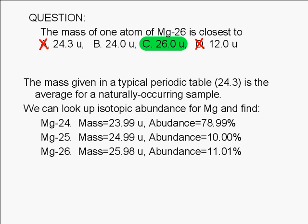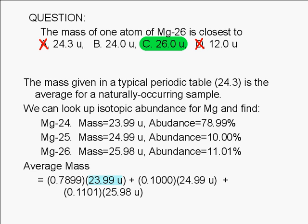From this information, we can find the average mass by multiplying each mass by the relative abundance and taking the sum. The average mass is equal to the mass of magnesium-24 multiplied by its relative abundance plus the mass of magnesium-25 multiplied by its relative abundance plus the mass of magnesium-26 multiplied by its relative abundance.